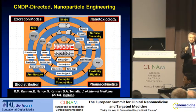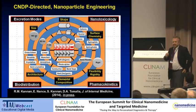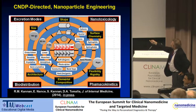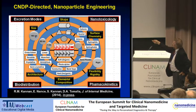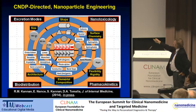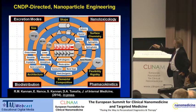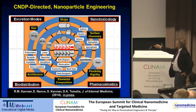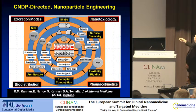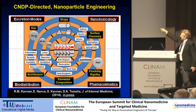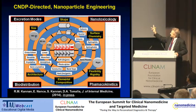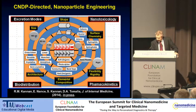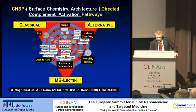Most importantly, the nanoscientist now has the opportunity to really optimize important features such as excretion modes, nanotoxicology, pharmacokinetics, and biodistributions — all of which we talk about here — pretty much by simply manipulating or engineering the critical nanoscale design parameters as shown.